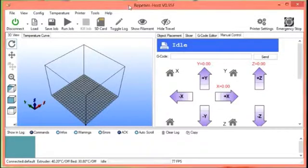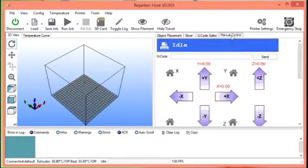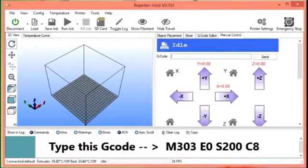Now let's do the PID auto-tuning. For this, go to Repetier Host. Then go to manual control. Type this G-code: M303, E0, S200, C8, and click send.